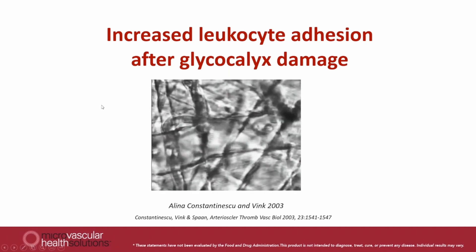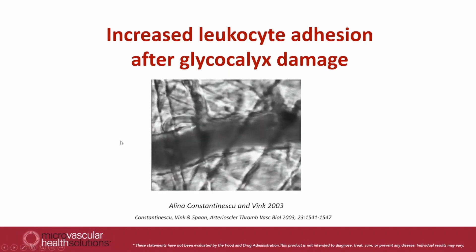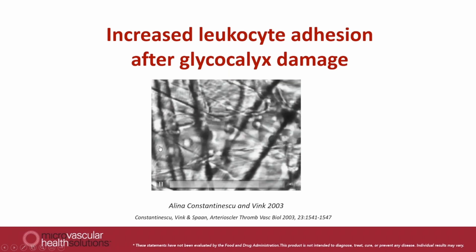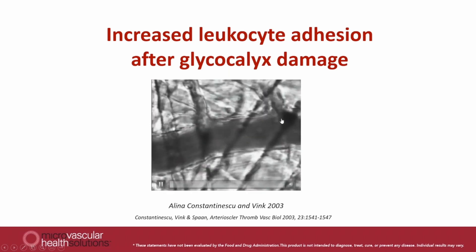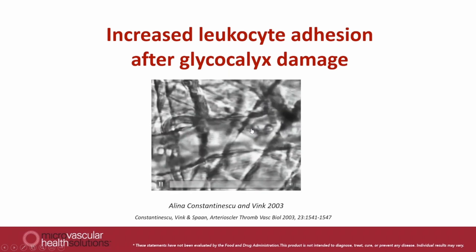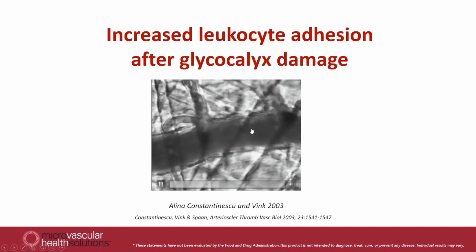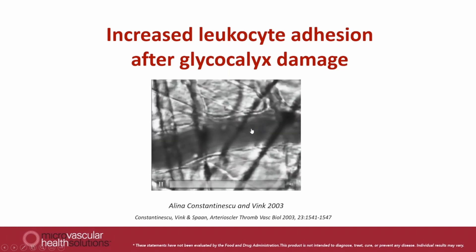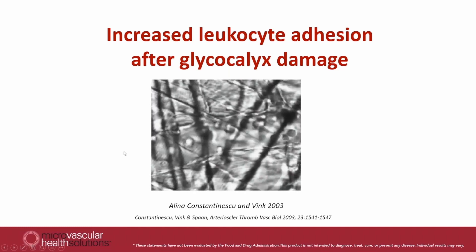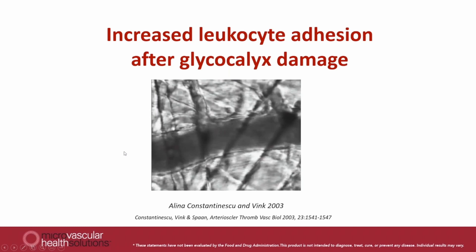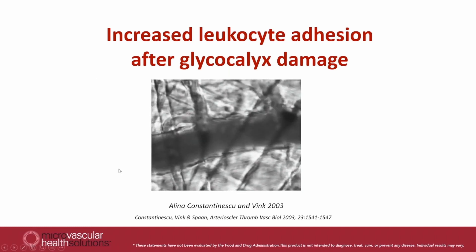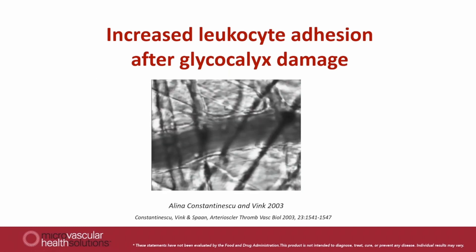In normal healthy conditions, in the presence of a healthy glycocalyx, leukocytes would not stick to the wall — they would just slowly roll over the glycocalyx to see if there's any damage that they need to repair. We then measured what happens with the level of sticking leukocytes if you remove the glycocalyx by injecting enzymes.